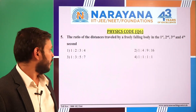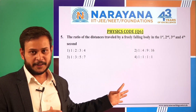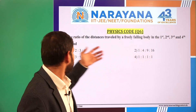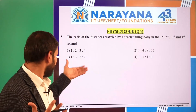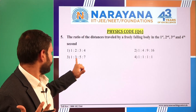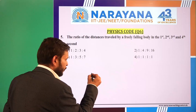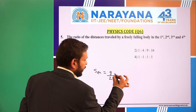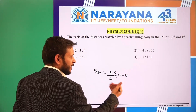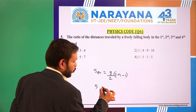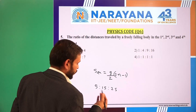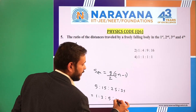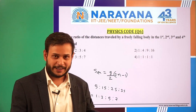Moving to the next question: the ratio of distances traveled by a freely falling body in the 1st, 2nd, 3rd and 4th second. As we read in many books, the ratio will be in odd numbers. Using the formula sn = g/2 × (2n−1) for each second, the distances are in ratio 1:3:5:7 — Galileo's concept. The 3rd option is correct.